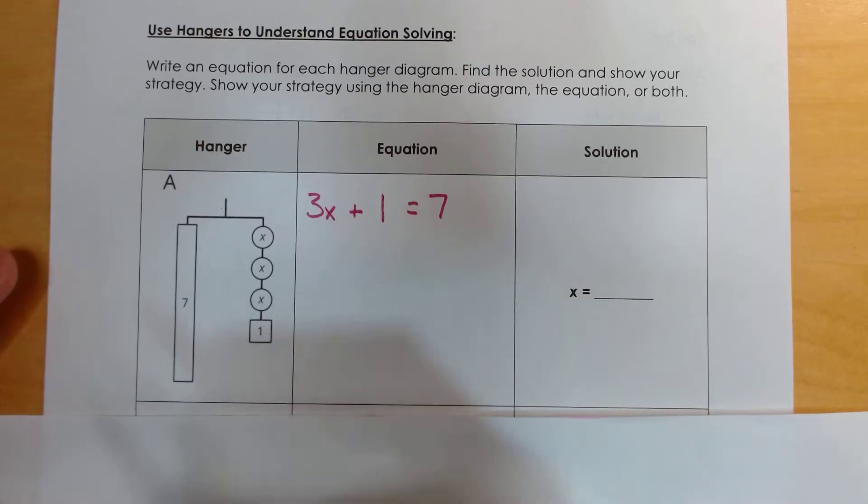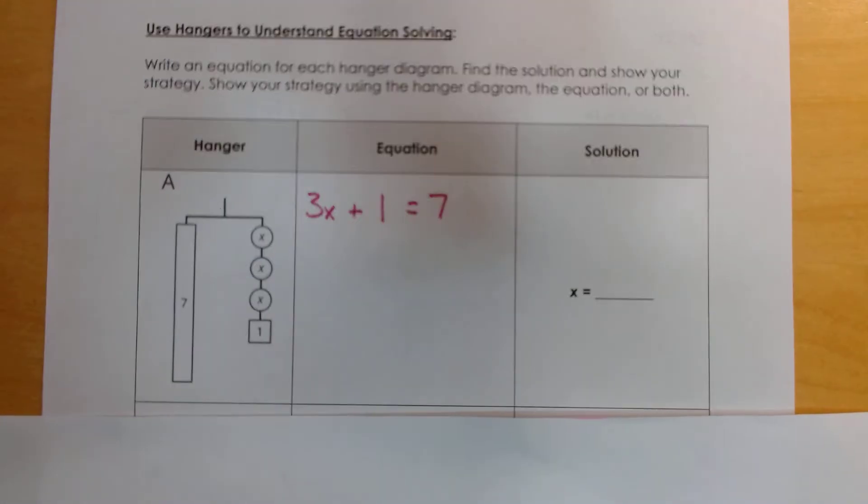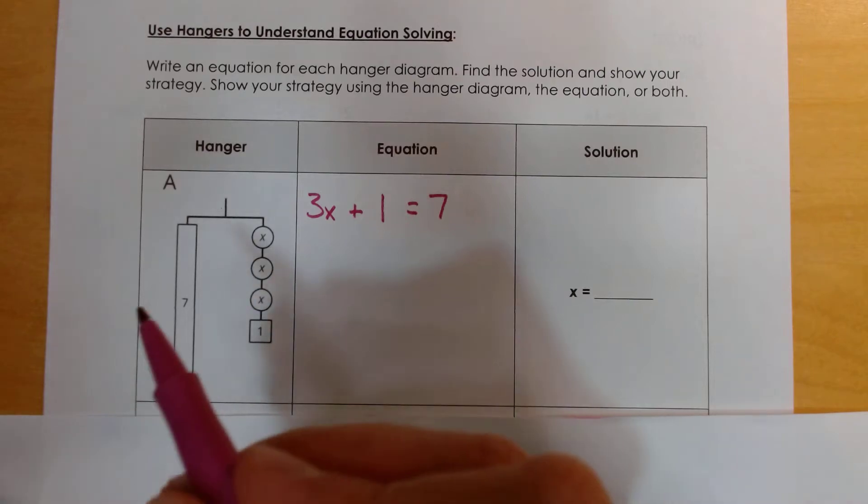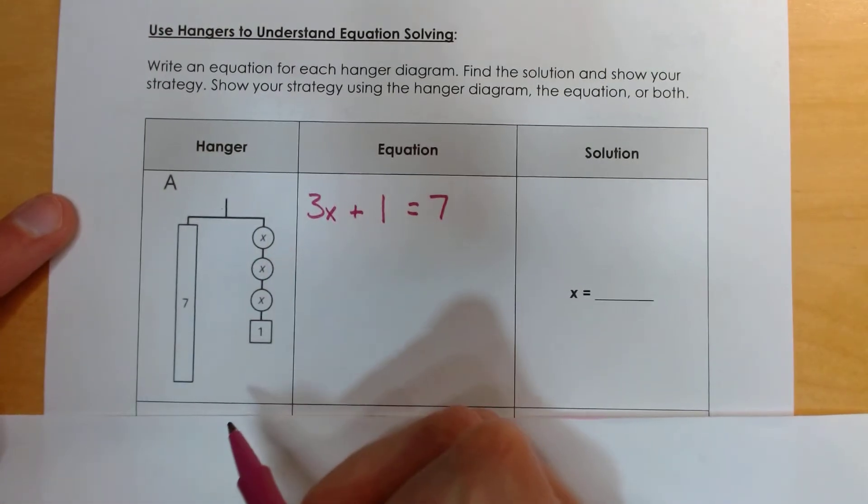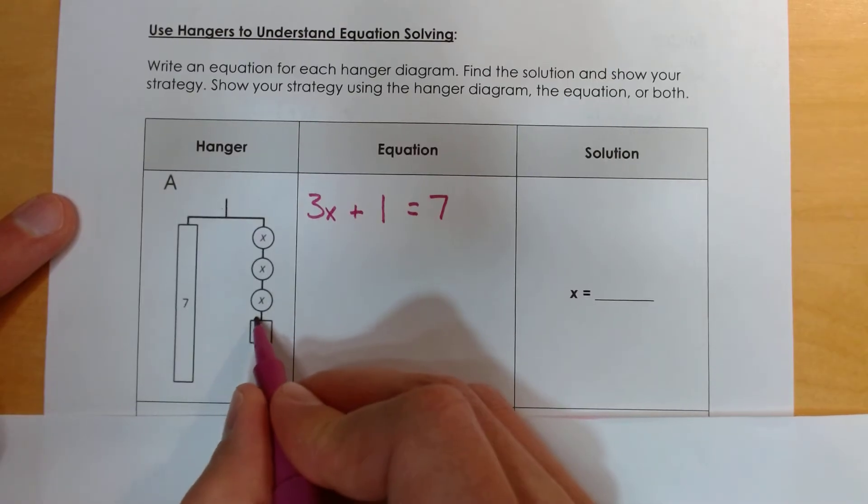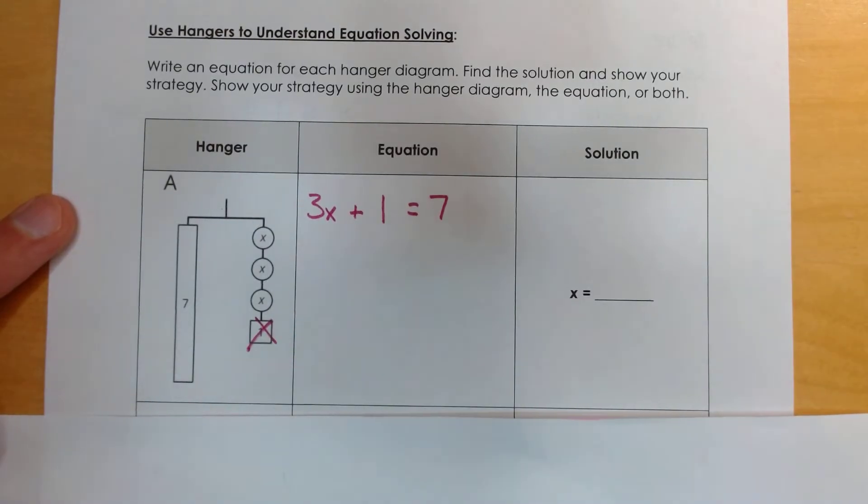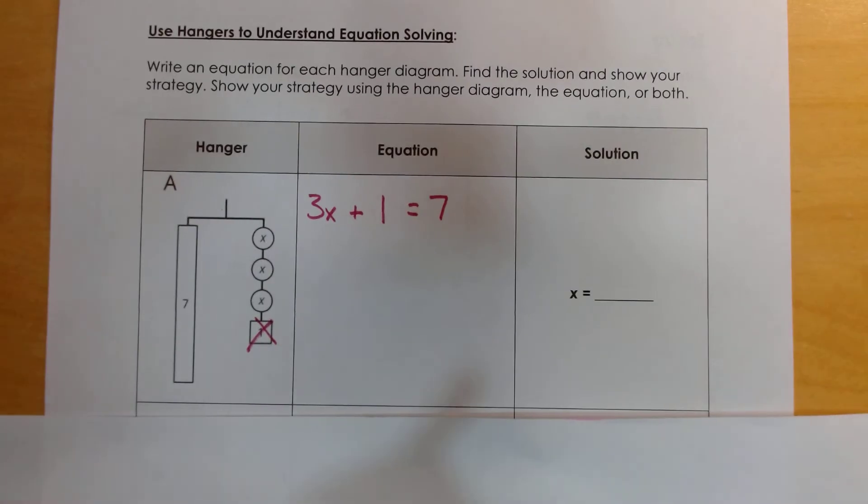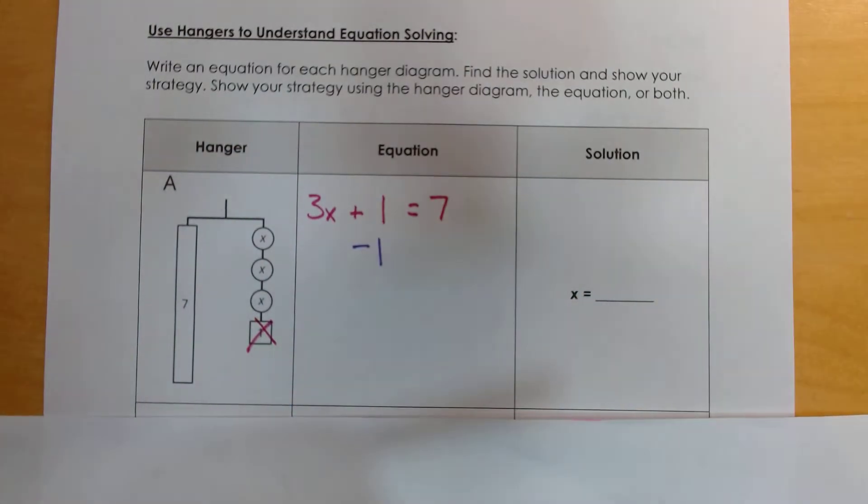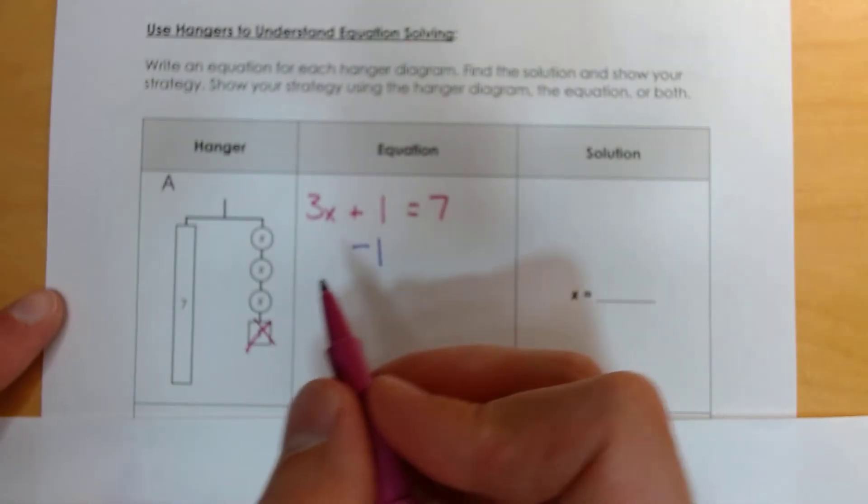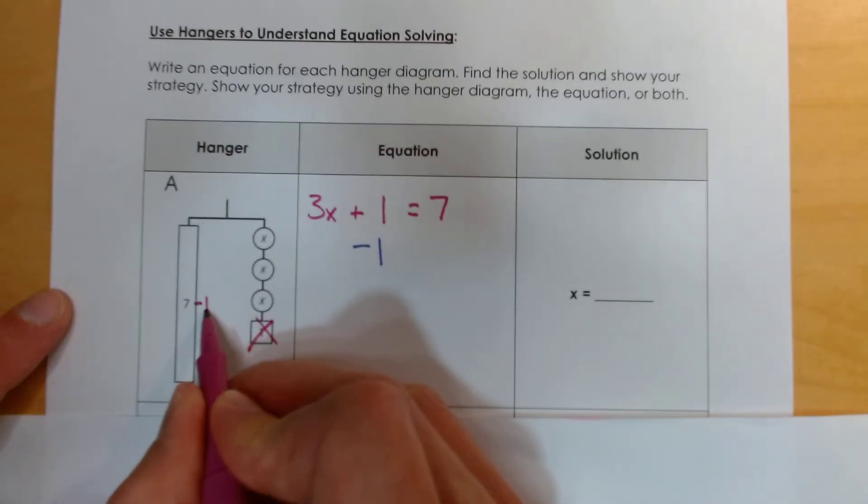When I say solve for x, I want to figure out what x equals. So I have to manipulate my hanger here to figure out not what 3x plus 1 equals, but just 1 little x. So the first thing I have to do is I have to remove 1 from here. I've got to get rid of that 1 if I just want to get 1x equals. So when I say remove, we think of subtraction. So my first step is to subtract away the 1. But if I do that, my equation becomes unbalanced. So to keep it balanced, I also have to remove 1 from my 7. So 7 minus 1 would be 6.